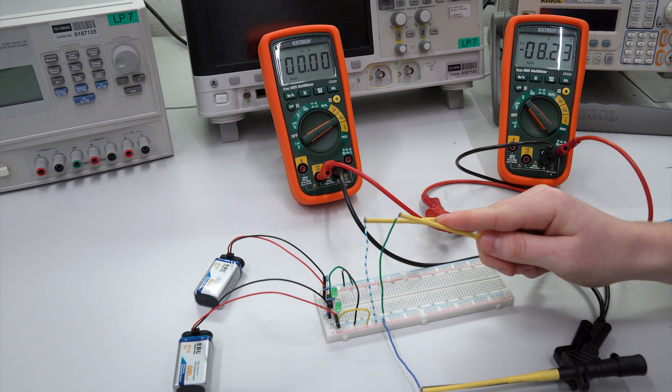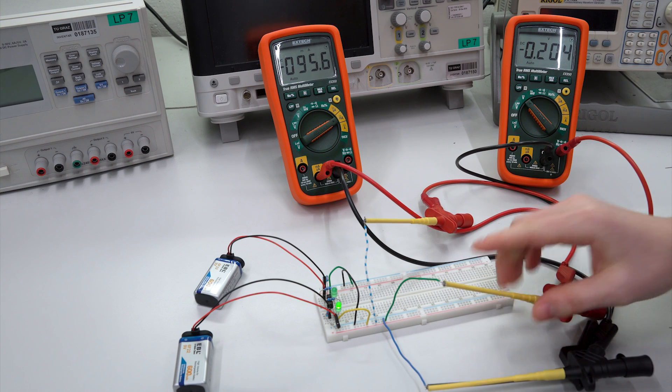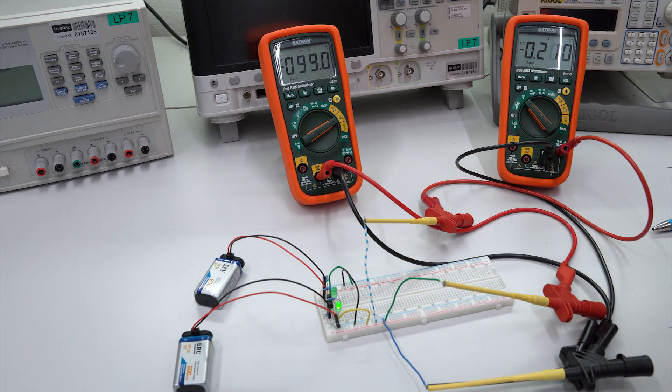So if we now connect it to the negative supply. We see that we draw around 100 milliamps. The voltage dropped severely. And the LED indicating that we have a shortcut is turning. It has turned on.